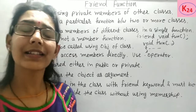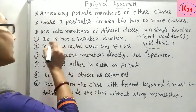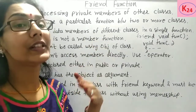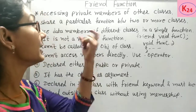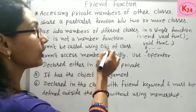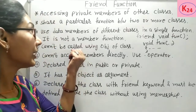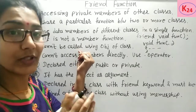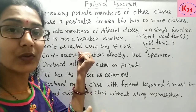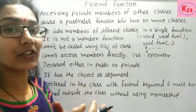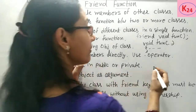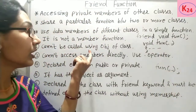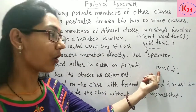Now the friend function has some characteristics. First, it is not a member function — it is outside the scope of the class. Second, it cannot be called using an object of the class. Because it is not a member function, it will not be called using the dot operator like 'object.function()'. Instead, it is simply called as 'fun(argument)' directly.